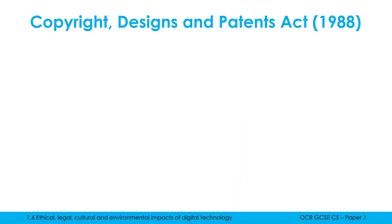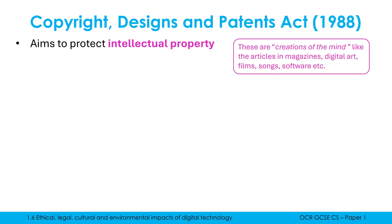The last law is the Copyright Designs and Patents Act — quite a mouthful. All of these laws are very complicated, and this is probably the most complicated, with lawyers whose whole job it is to interpret it. What it broadly aims to do is protect intellectual property, sometimes shortened to IP. Intellectual property are creations of the mind — basically ideas. Writing an article, drawing art, making a film, writing a song, and for our purposes writing software are all examples of intellectual property, because writing a program requires coming up with an idea and choosing what code to write and when.